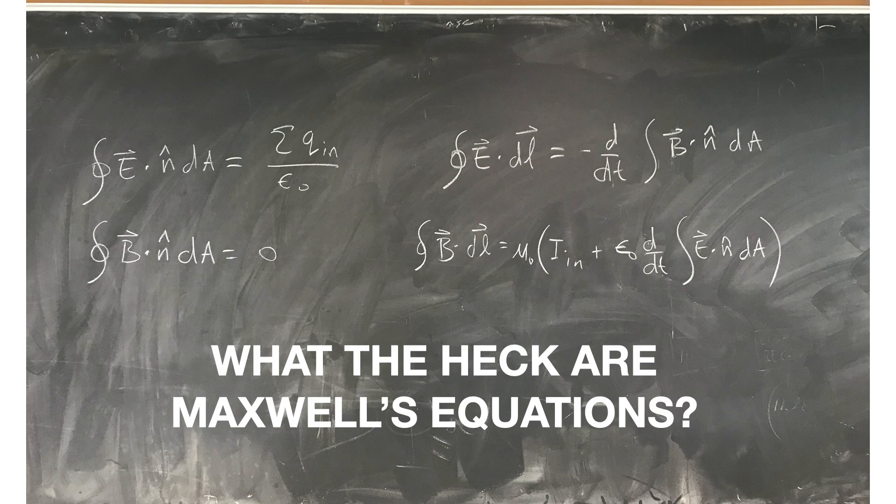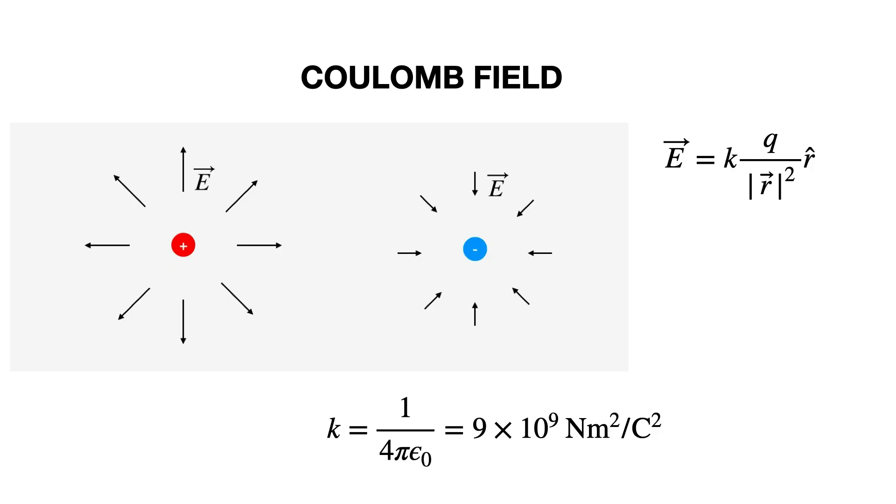So let's start with the review. We have the Coulomb field. If I have a positive electric charge, it makes an electric field that looks like this. If I have a negative electric charge, it looks like this. I can calculate the electric field due to single charges. If I have multiple charges, I can do that too.